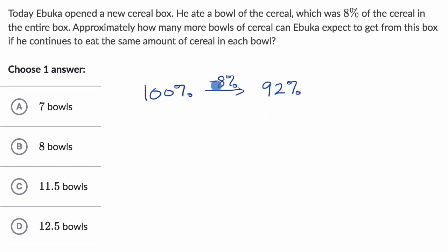And then, every time, he's going to eat 8% of the original amount that was in the box. So if now we have 92% of the original amount in the box, and at every serving, he's going to eat 8% of it, we just divide by 8% to figure out how many servings he'd have.